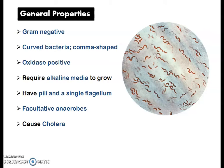They have pili all over the body and a single polar flagellum, which you can also see in the image given. They are facultative anaerobes, meaning they can survive in the absence of oxygen, and they cause cholera. Being gram-negative means they keep pink color on gram stain, and they are comma-shaped bacteria.